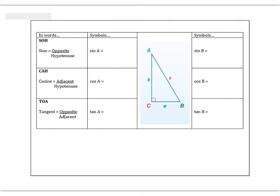The three trigonometric ratios we're going to study: the first is called sine, which compares an opposite side to a hypotenuse. Cosine is our second ratio, comparing an adjacent side to a hypotenuse. And our third ratio is tangent, which compares an opposite side to an adjacent side.